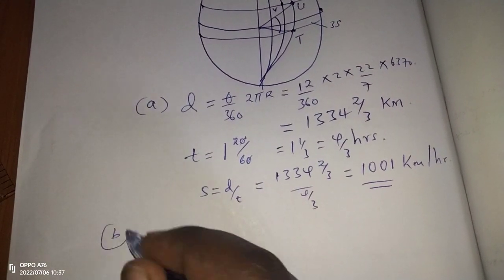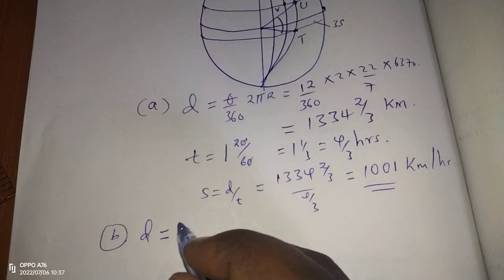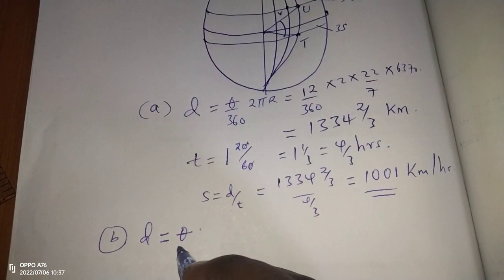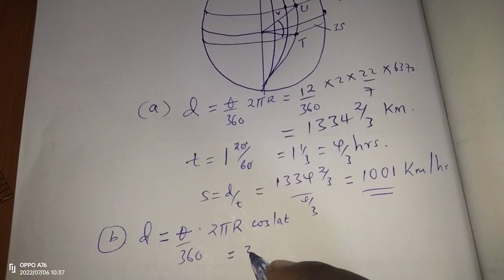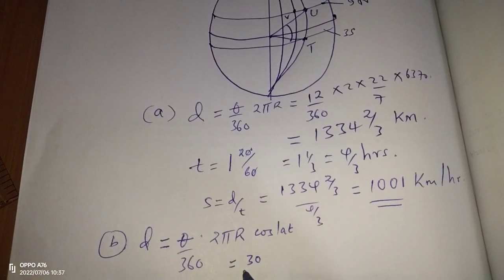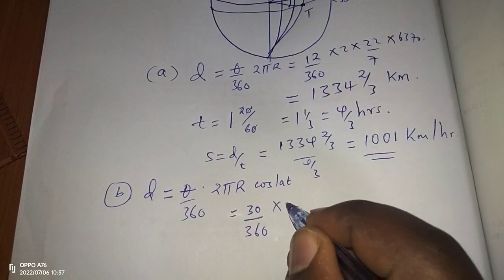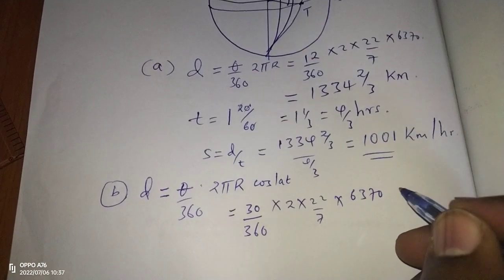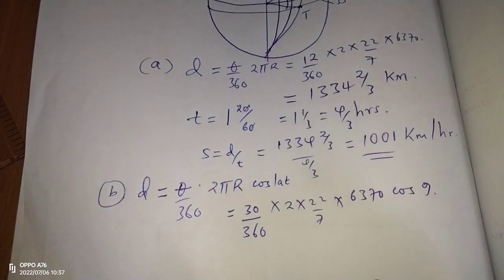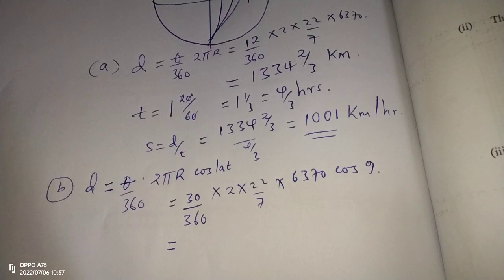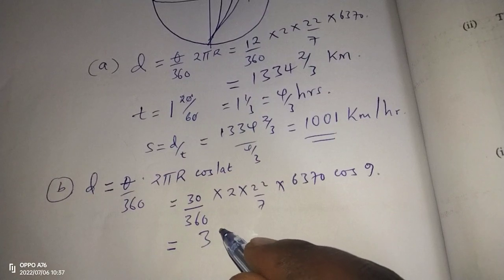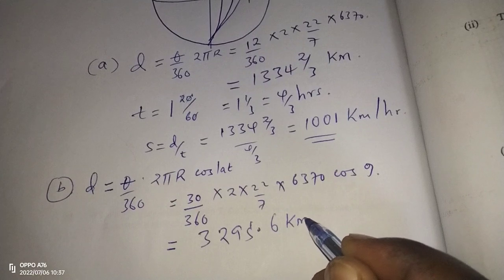Since the path from U to V is along a small circle, the distance formula is: theta/360 × 2πr × cos(latitude). The angle difference is 30 degrees, the latitude is 9 degrees north, so distance = 30/360 × 2 × 22/7 × 6370 × cos(9°), which gives us a distance of 3295.6 kilometers to one decimal place.